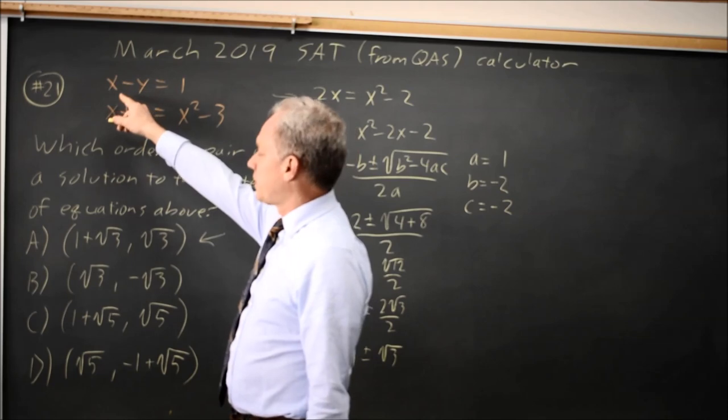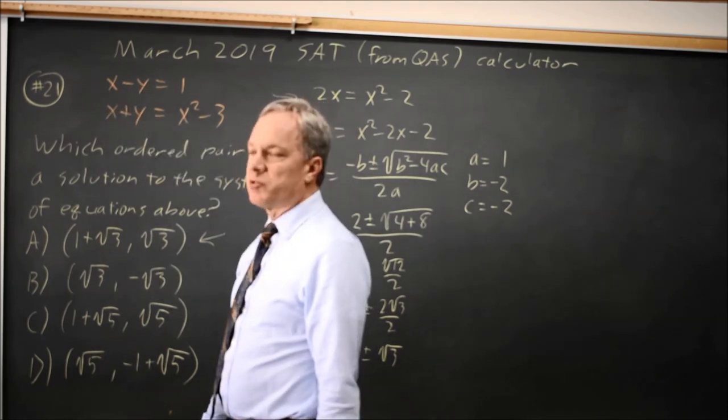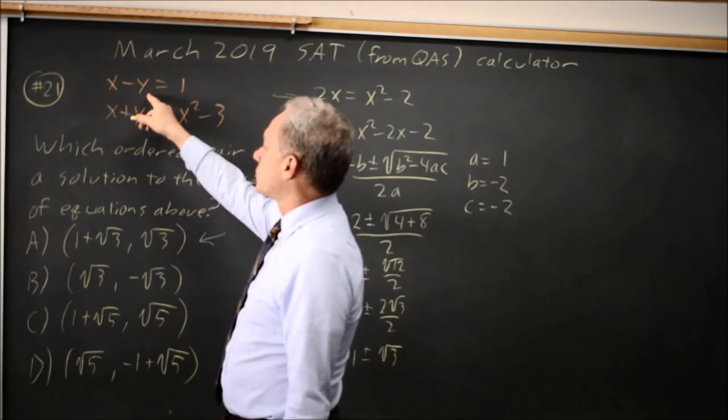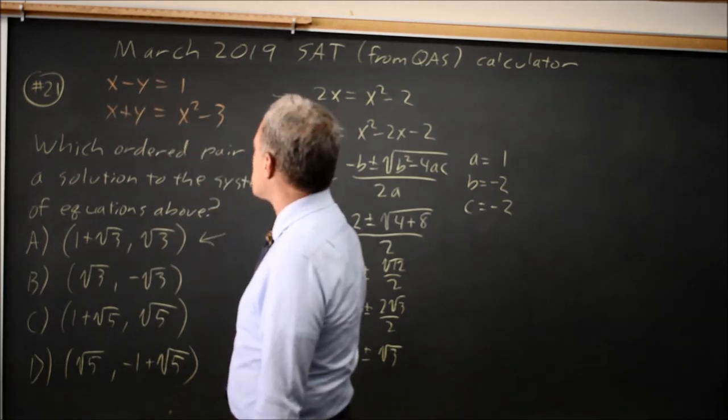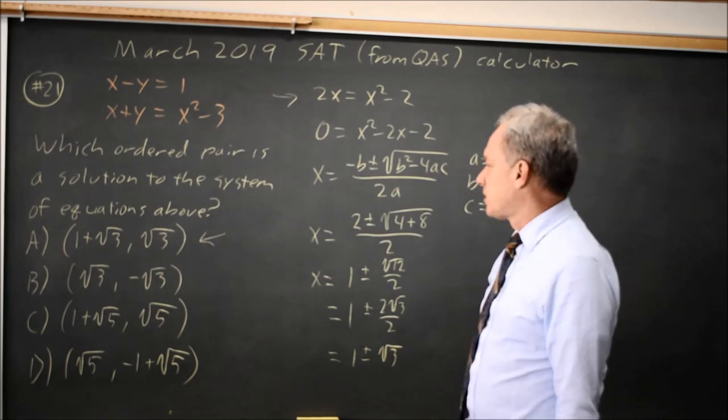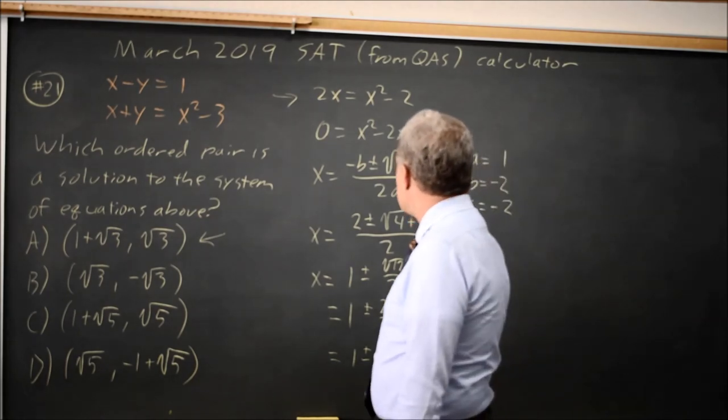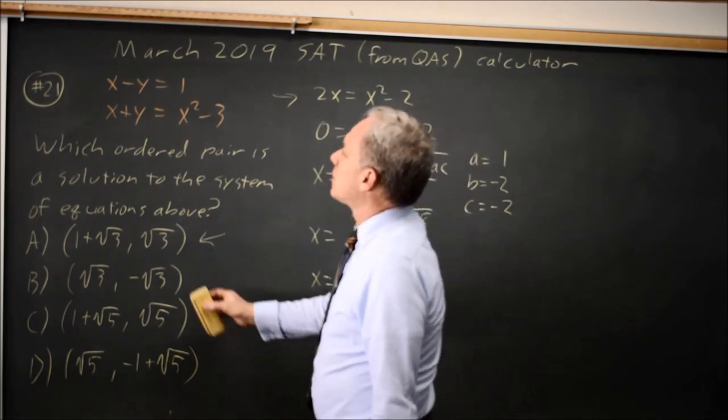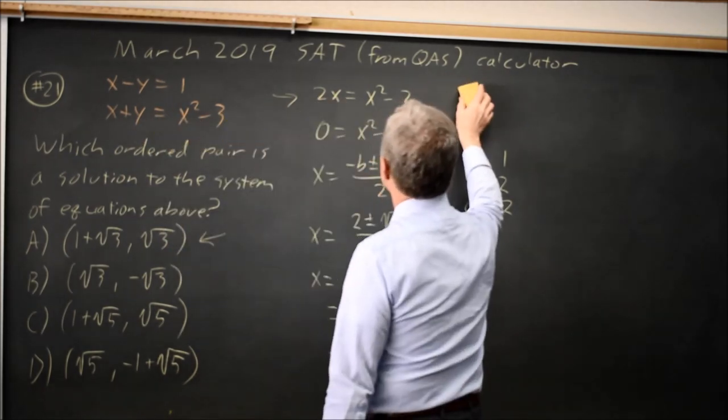If I substitute choice a, which is the only one that has 1 plus root 3, into the first equation, I get 1 plus root 3 minus root 3, and that's 1, so it does work for the first equation. I still don't want to try substituting it into the second equation. But quadratic formula works here after I use a linear combination to eliminate the variable y.